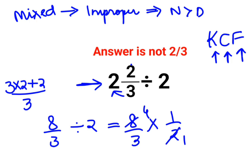So this gives us 4/3. The answer is 4/3. Now understand that this is also an improper fraction because the numerator is greater than the denominator.